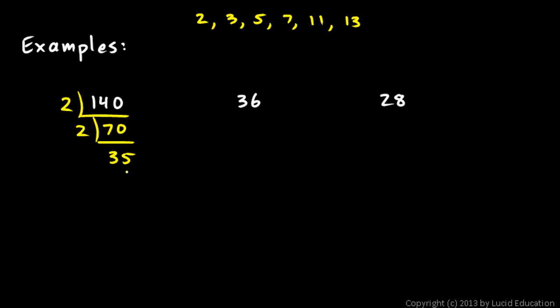So is it divisible by 3? Well, no. So if it's not divisible by 3, we go to the next number in the list. The 5. 35 is divisible by 5. It's 5 times 7. And 7 is prime. So we're done. The answer here is 2 times 2 times 5 times 7.